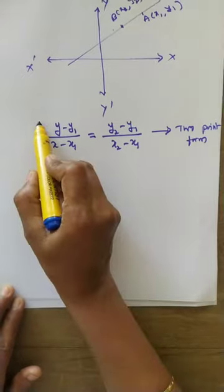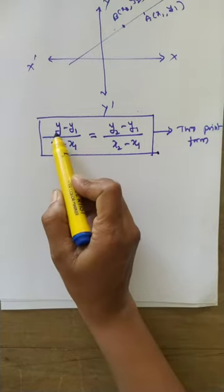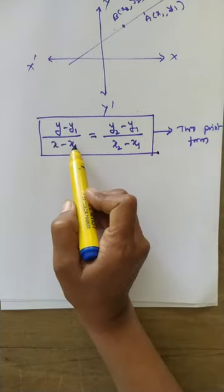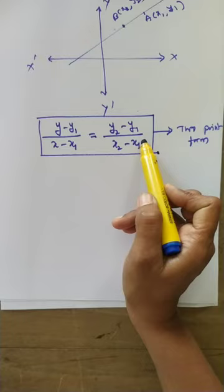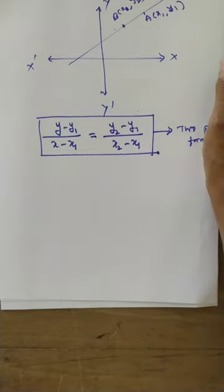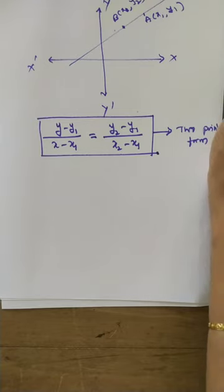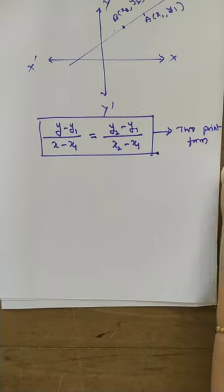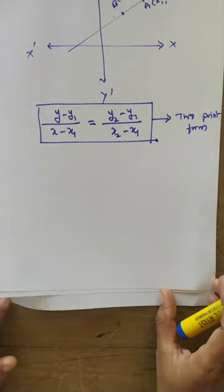The equation of straight line passing through two points is given by y minus y1 divided by x minus x1 is equal to y2 minus y1 divided by x2 minus x1. The straight line passes through two points, and the angle made by the straight line is unknown — that is why we cannot find slope. Instead, two points are given.